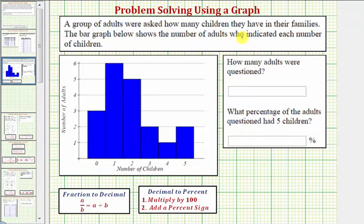A group of adults were asked how many children they have in their families. The bar graph below shows the number of adults who indicated each number of children.